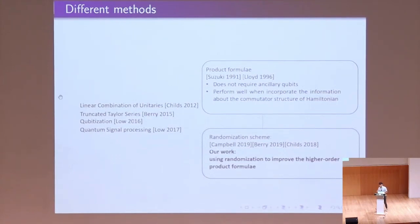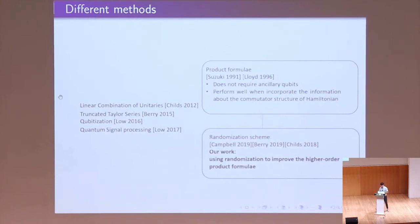Interestingly, this year several randomized schemes have been proposed to improve the performance of the product formula — like the work proposed by Andrew Charles in 2019, and also related work in 2019. Today, my work is in this framework: we are trying to propose another randomized scheme to improve the higher-order product formula.